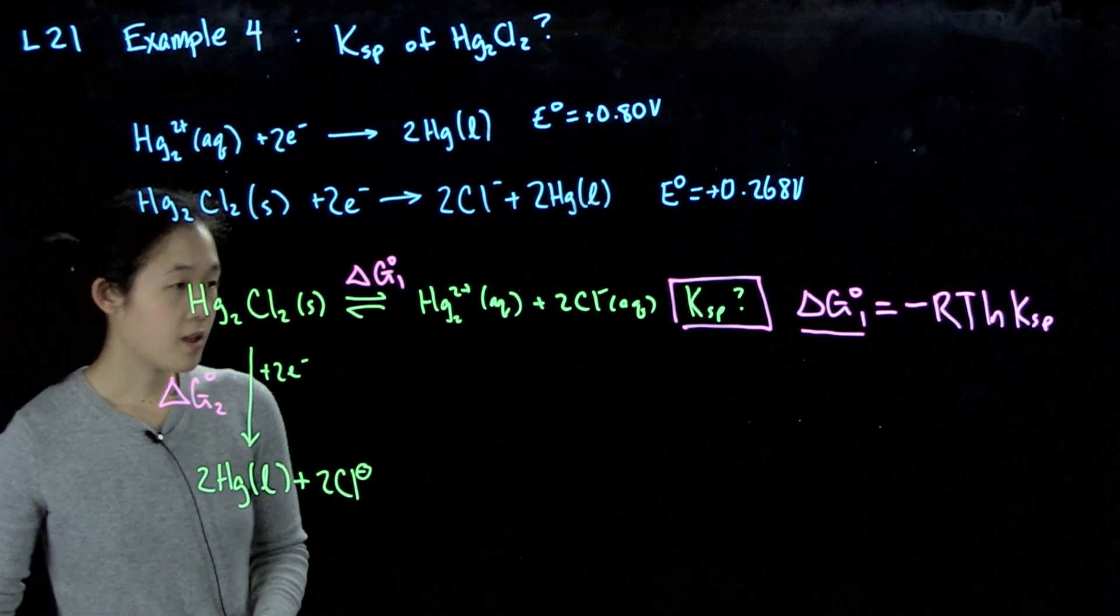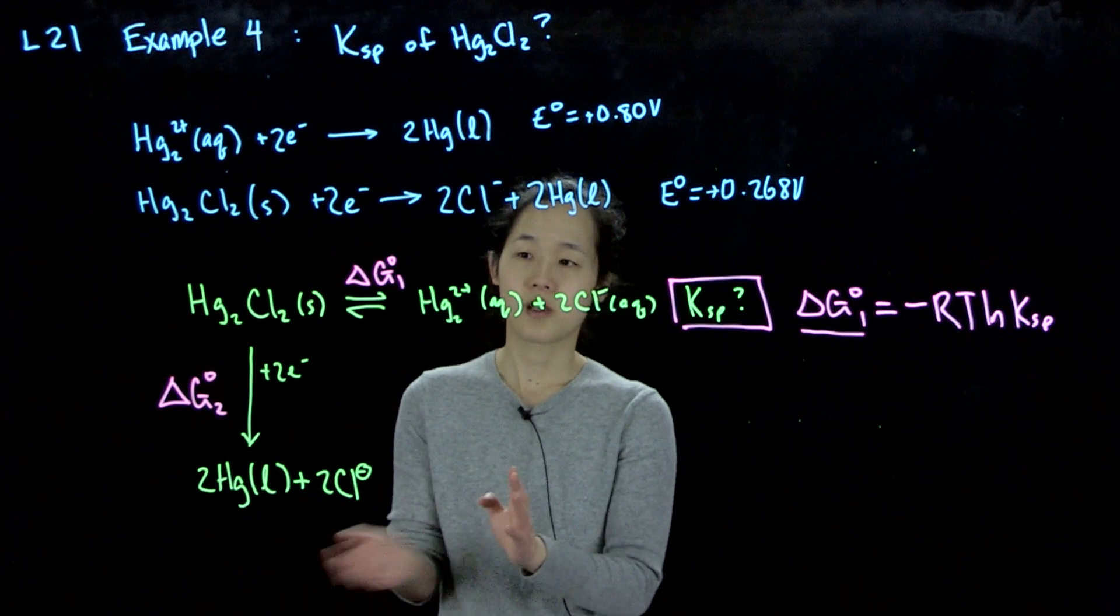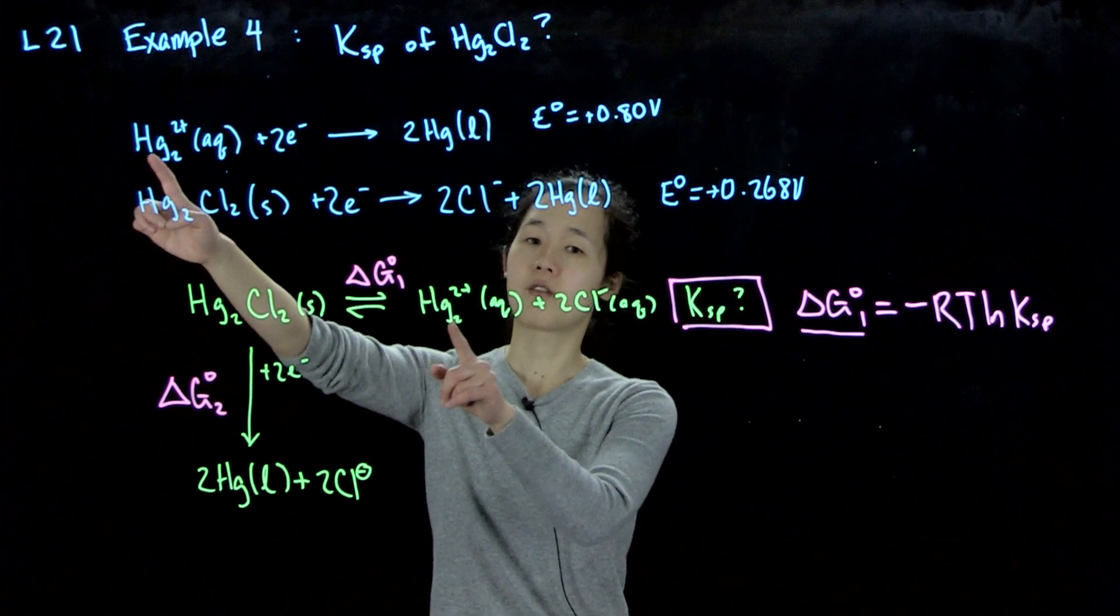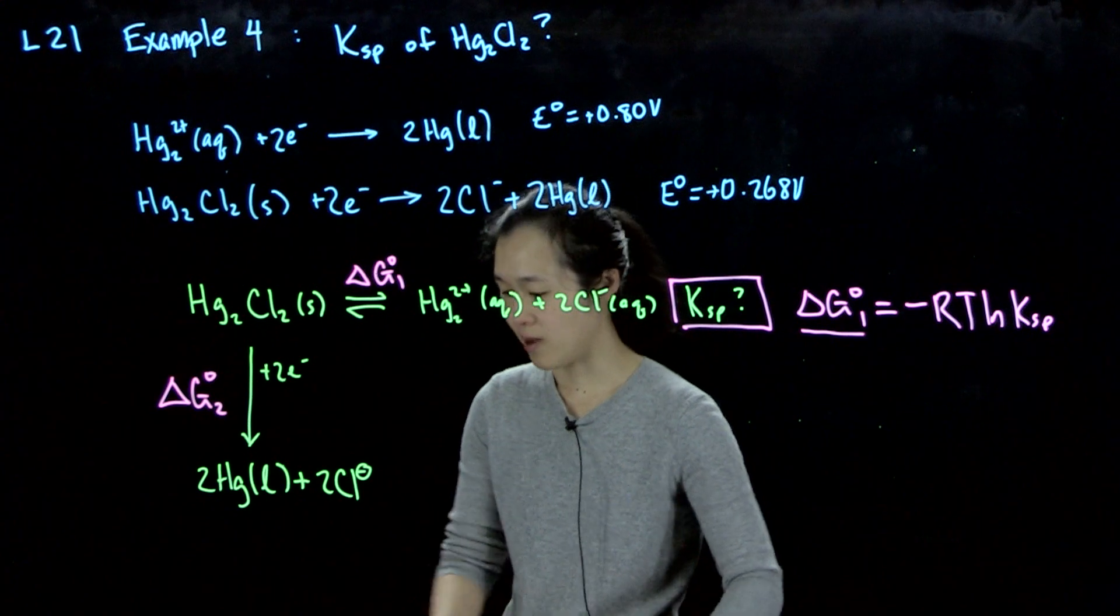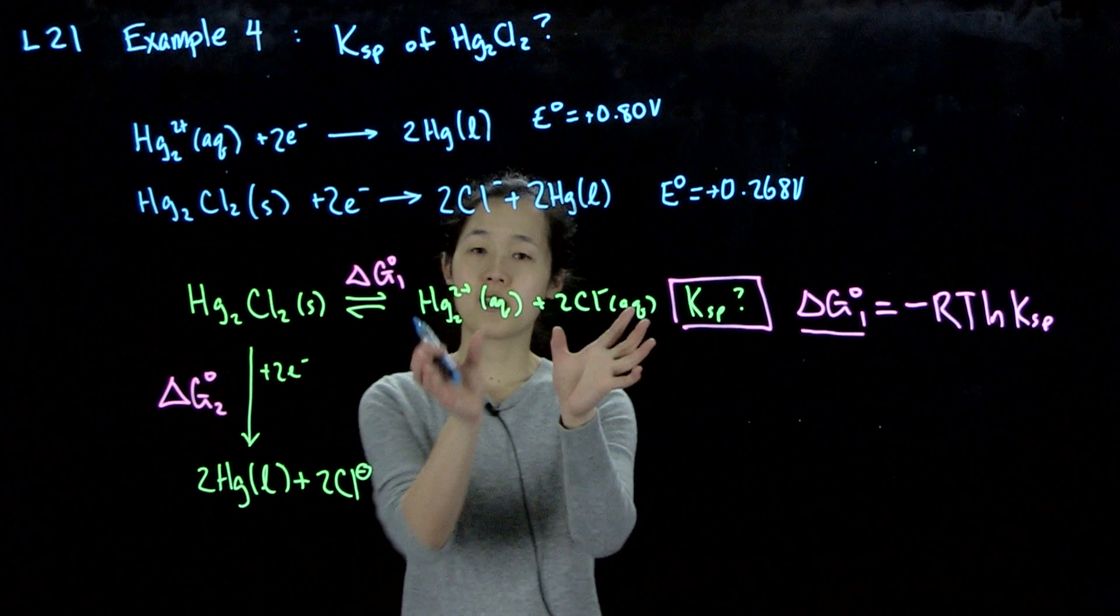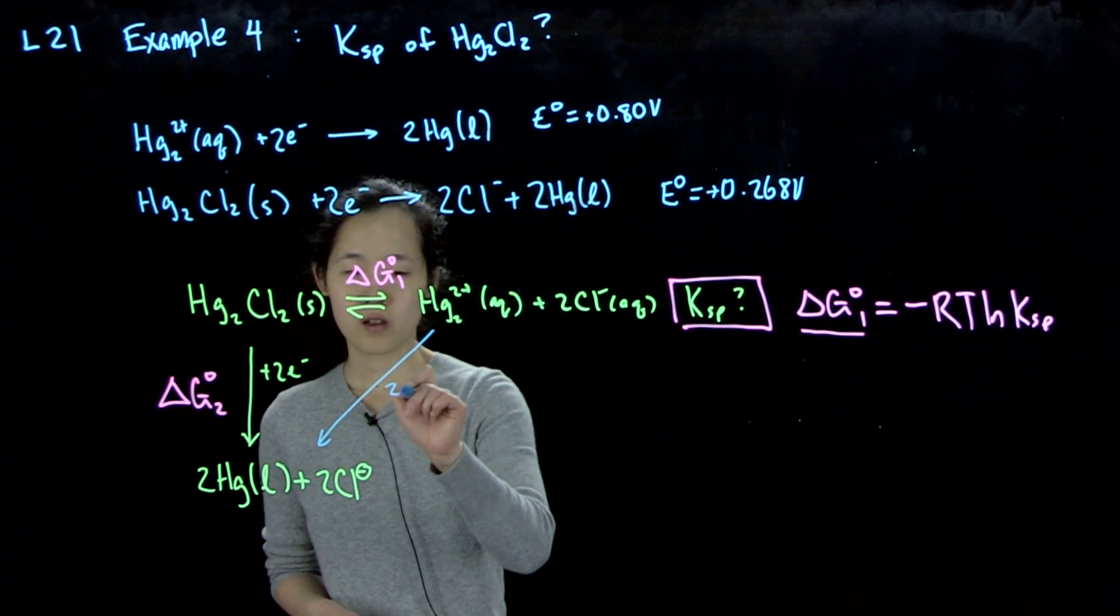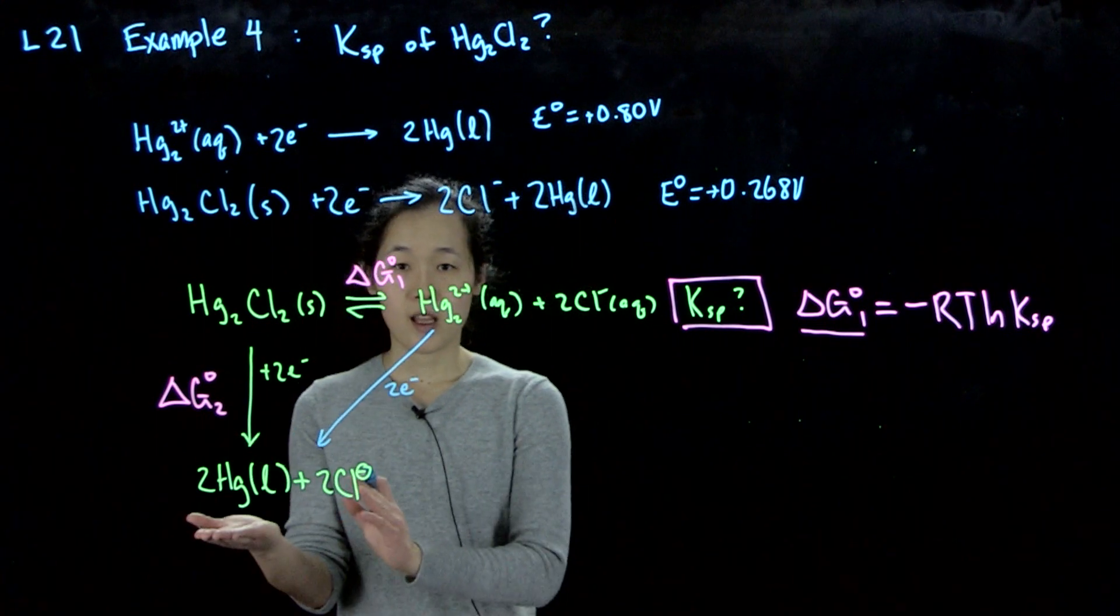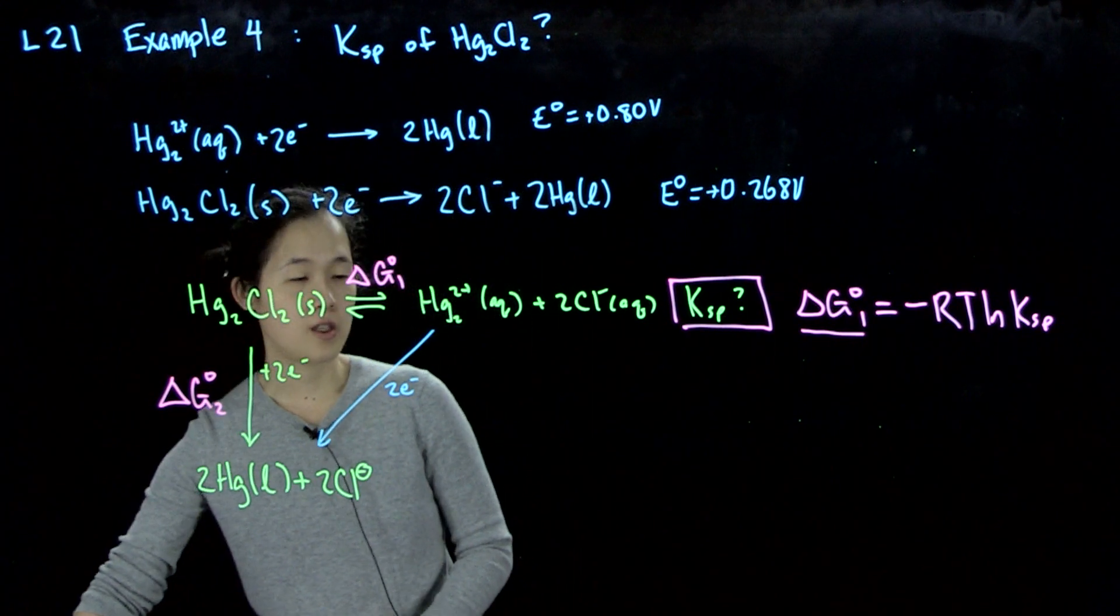And then over here, how can we relate the products to this for a thermochemical cycle? We can see that this mercuric ion over here is the same as this one over here. So then we can relate this reduction. I'm going to draw this in maybe blue. If we reduce this, so this is still a balanced reaction, and if we add two electrons here, then we also get to the same liquid mercury and two chloride ions. So overall, if we call this delta G0 3,